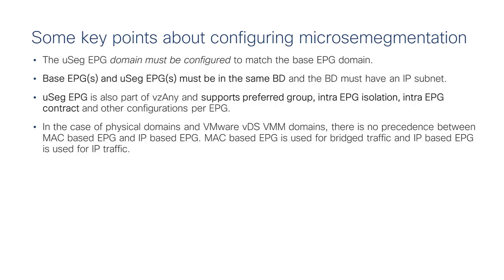For physical domains and VMware domains, there is no precedence conflict between MAC and IP-based EPGs: traffic that is Layer 2 switched is classified based on MAC, and traffic that is routed is classified based on IP EPGs.